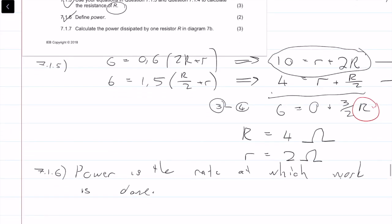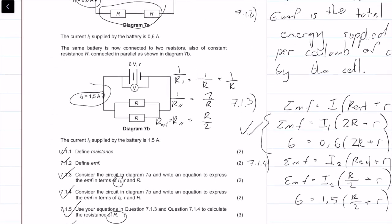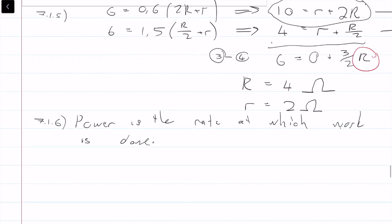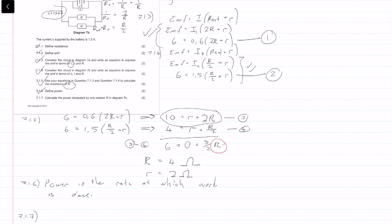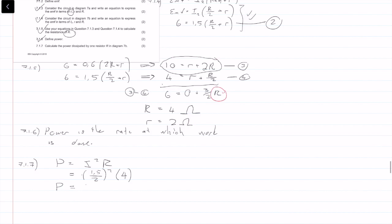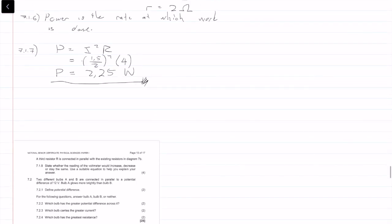Then it says calculate the power dissipated by one resistor in diagram 7b. 7b is the lower one, and we want to know the power dissipated by one resistor. Basically we're going to use the equation power equals i squared r. We know that the current is going to split evenly because the resistances are the same, so it's 1.5 over 2 squared times the resistance of 4. We get the power equaling 2.25 units of watts. We get ourselves 3 marks.